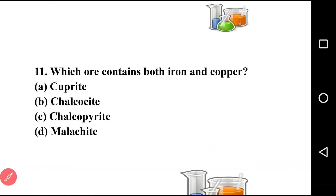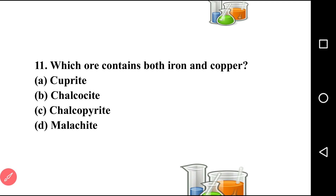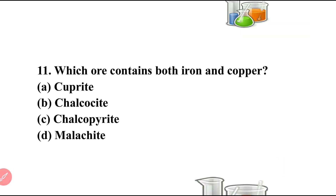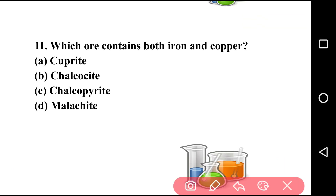Going to next question, question number eleven: which ore contains both iron and copper? There are four options: cuprite, chalcocite, chalcopyrite, malachite. The answer is option C, that is chalcopyrite. Chalcopyrite is an ore which contains both iron and copper.